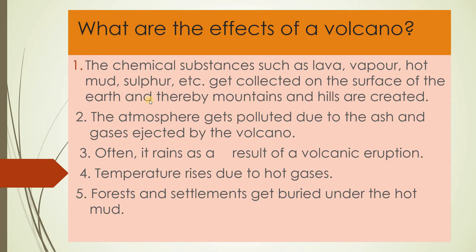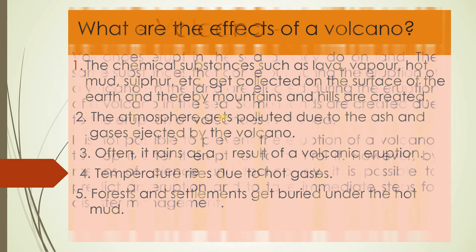These substances collected on the surface of the earth create mountains and hills — yaani itna zyada saari cheezein nikal jaati hain ki mountains aur hills taiyaar ho jaati hain. The atmosphere gets polluted due to the dust and gases ejected by the volcano. Often, temperature rises due to the hot gases. Forests and settlements get buried under the hot mud — jungle, jhaadi, rehaaishi jagahein sab jo hain, iske keechar mein dab jaate hain. Is tarah se volcano, yaani jwalamukhi ka effect padta hai.